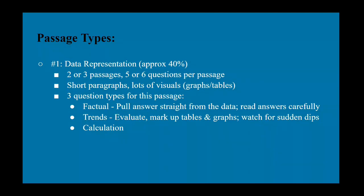So there are three or four different types of passages that you'll encounter on the science portion. The first one is data representation, which is about 40% of the test. There are two or three passages, each with five or six questions per passage. Data representation is very light on actual words, on paragraphs, but there are lots of visuals, graphs, tables, diagrams.